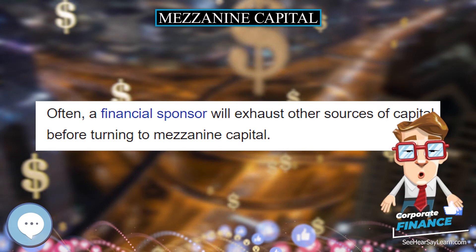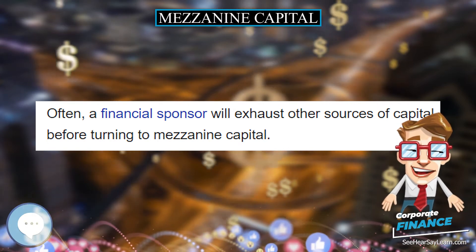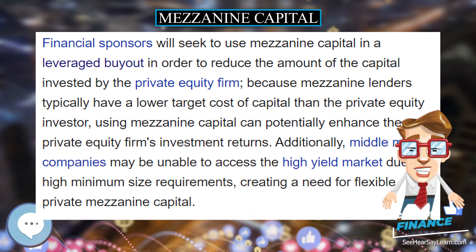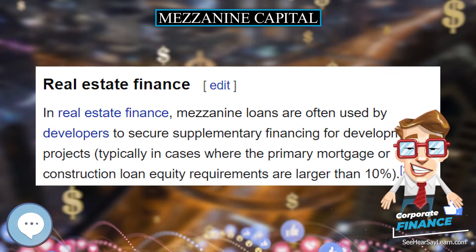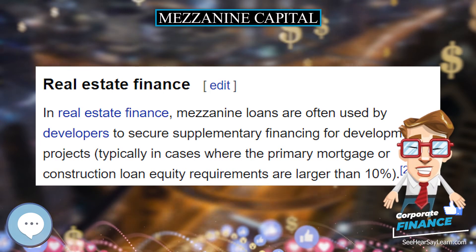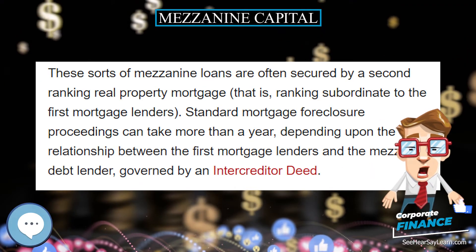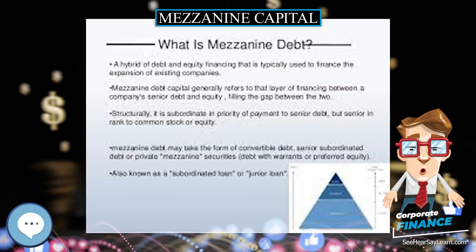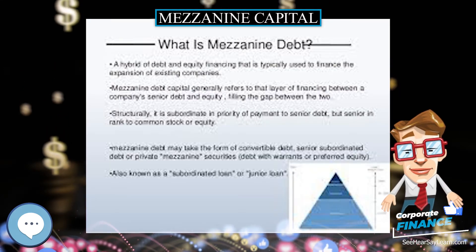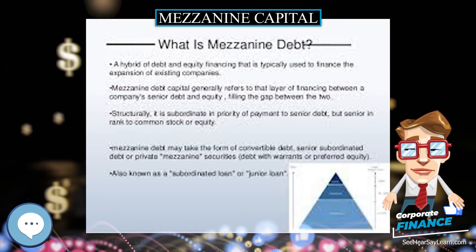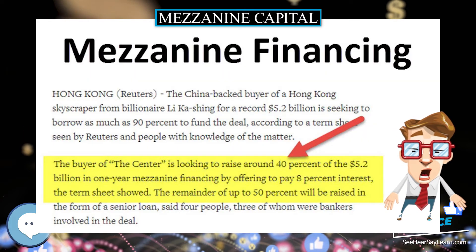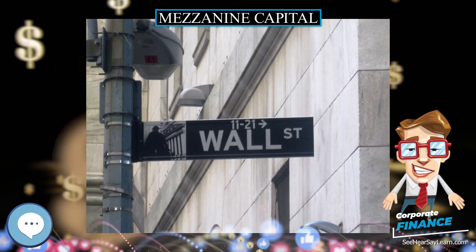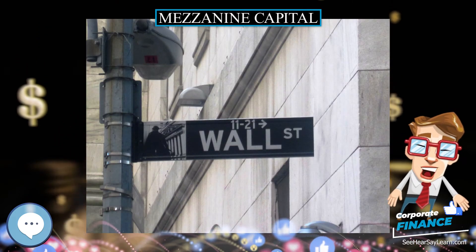Financial sponsors will seek to use mezzanine capital in a leveraged buyout in order to reduce the amount of capital invested by the private equity firm. Because mezzanine lenders typically have a lower target cost of capital than the private equity investor, using mezzanine capital can potentially enhance the private equity firm's investment returns. Additionally, middle market companies may be unable to access the high yield market due to high minimum size requirements, creating a need for flexible, private mezzanine capital.